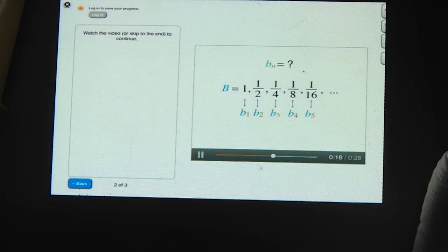What's a general formula for Bn, the nth term in the sequence? It'll be a formula that's a function of n. For example, when n is 3, your formula should tell you that B3 equals a fourth.